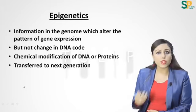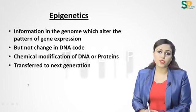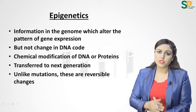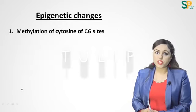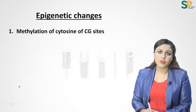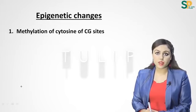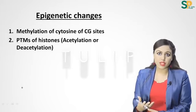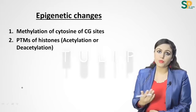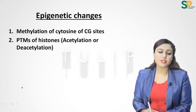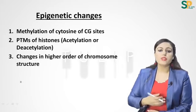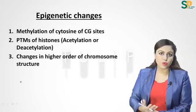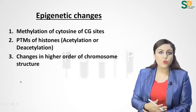Epigenetic changes are chemical changes in the DNA or proteins — not changes in DNA codons — and this information is transferred to the next generation. Unlike mutations, these changes are reversible. The various epigenetic changes include: methylation of cytosine at CG sites (in DNA), PTMs of histones (mainly acetylation and deacetylation), and changes in higher-order chromosome structure such as euchromatin or heterochromatin formation.